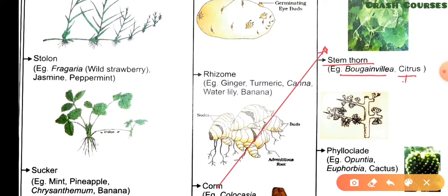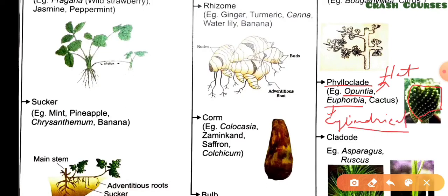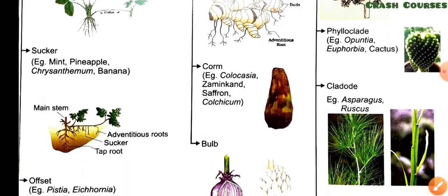Coming to the next type, that is phyloclade. In phyloclade, the stem is modified into a fleshy flat structure like in Opuntia, or fleshy cylindrical like in Euphorbia, giving it a green leaf-like structure that carries out photosynthesis. In Opuntia it is flat and in Euphorbia it is fleshy cylindrical.